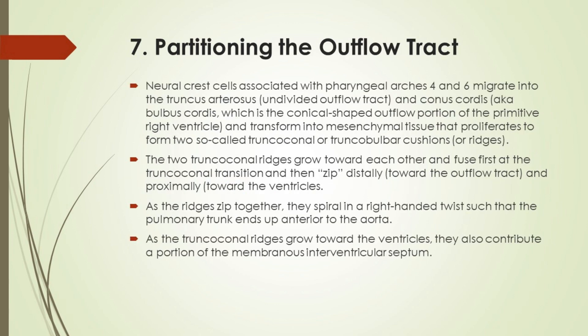Partitioning the outflow tract: Neural crest cells associated with pharyngeal arches 4 and 6 migrate into the truncus arteriosus — the undivided outflow tract — and conus cordis, also known as bulbus cordis, which is the conical-shaped outflow portion of the primitive right ventricle. These cells transform into mesenchymal tissue that proliferates to form two so-called truncoconal or truncobalbar cushions, or ridges. The two truncoconal ridges grow toward each other and fuse first at the truncoconal transition, then zip distally toward the outflow tract and proximally toward the ventricles. As the ridges zip together, they spiral in a right-handed twist such that the pulmonary trunk ends up anterior to the aorta. As the truncoconal ridges grow toward the ventricles, they also contribute a portion of the membranous interventricular septum.